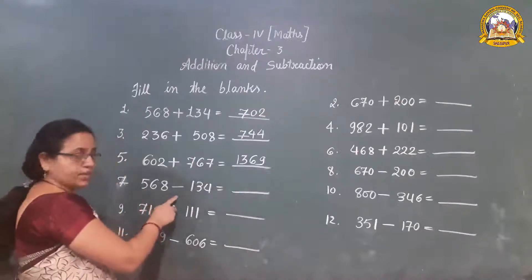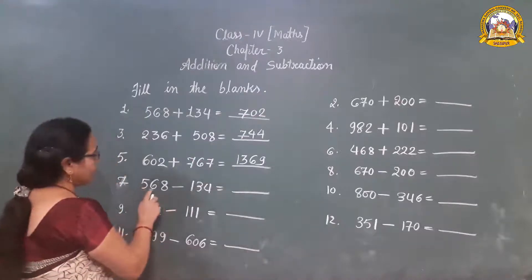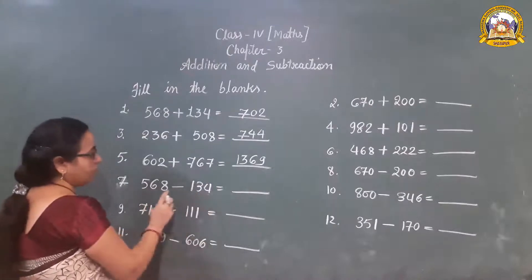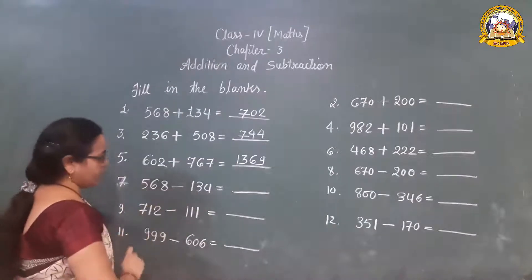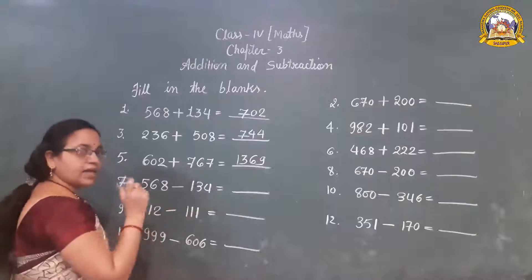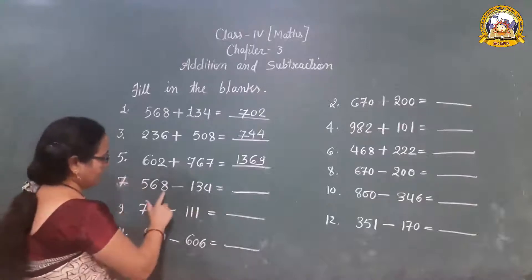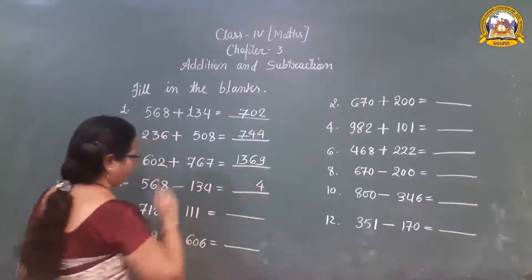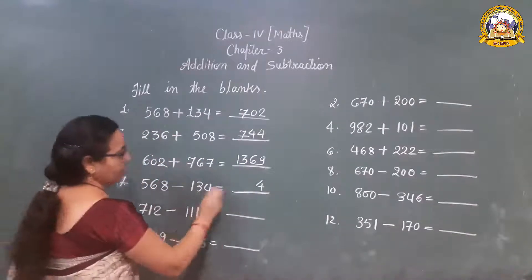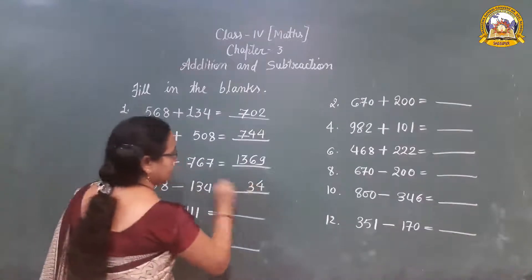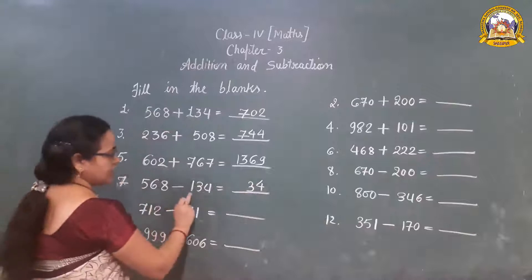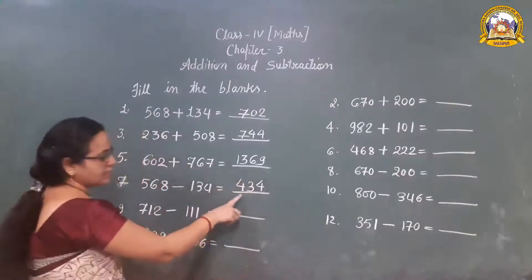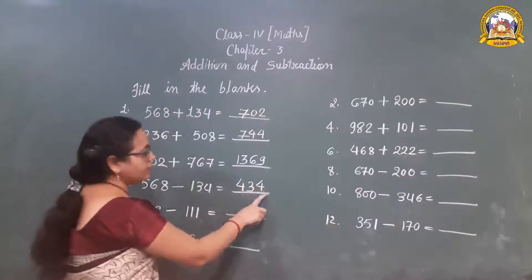Now subtraction. 568 minus 134. How to do subtraction? First we take the ones digit. 8 minus 4 is 4. 6 minus 3 is 3. 5 minus 1 is 4. So what is our answer? Our answer is 434.